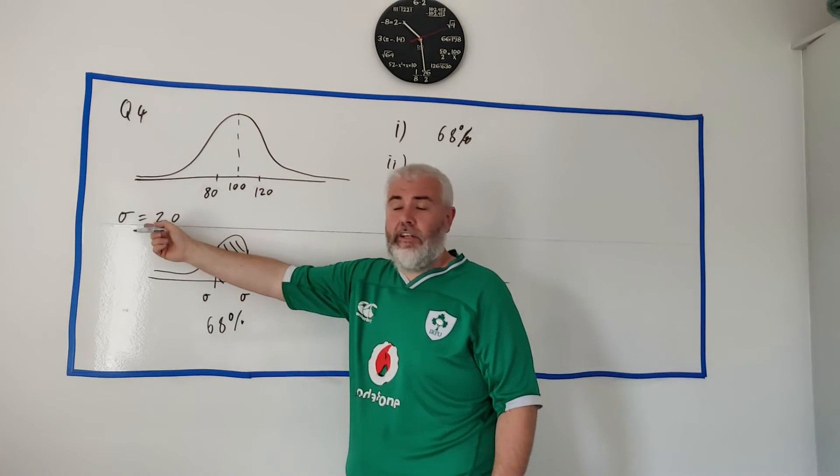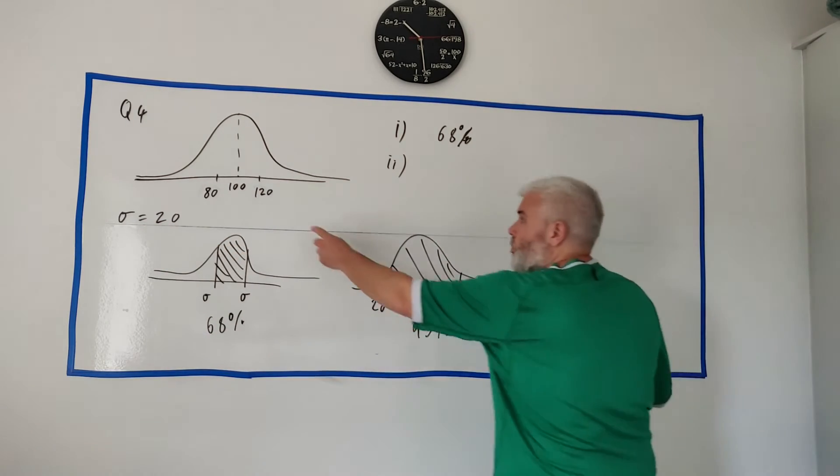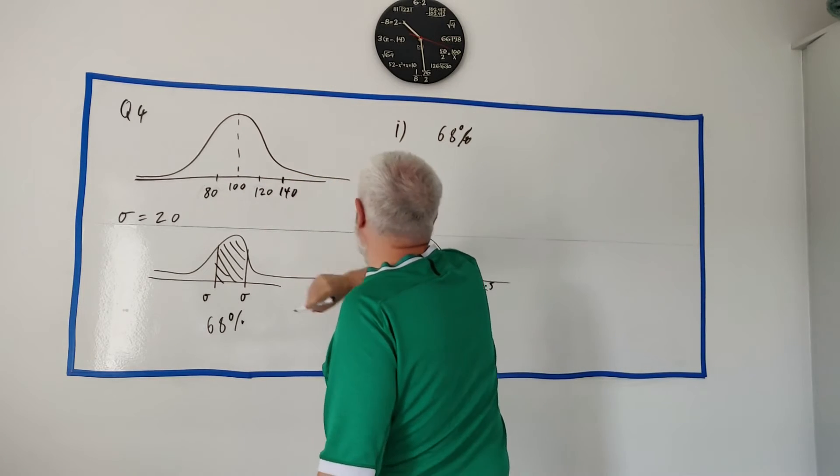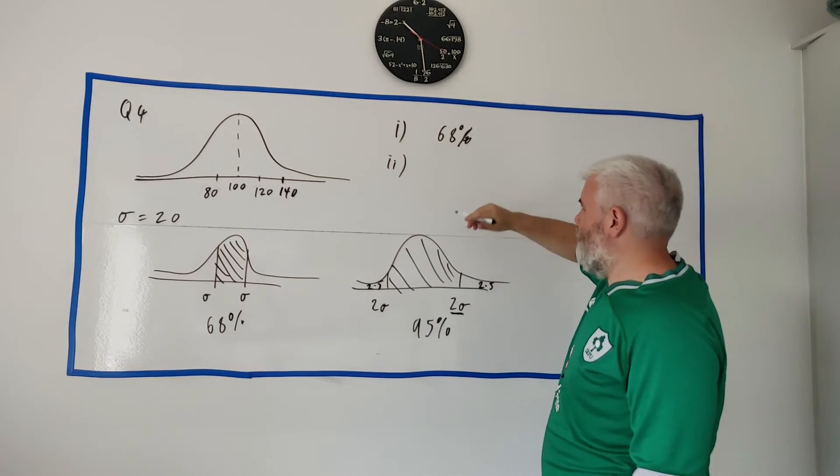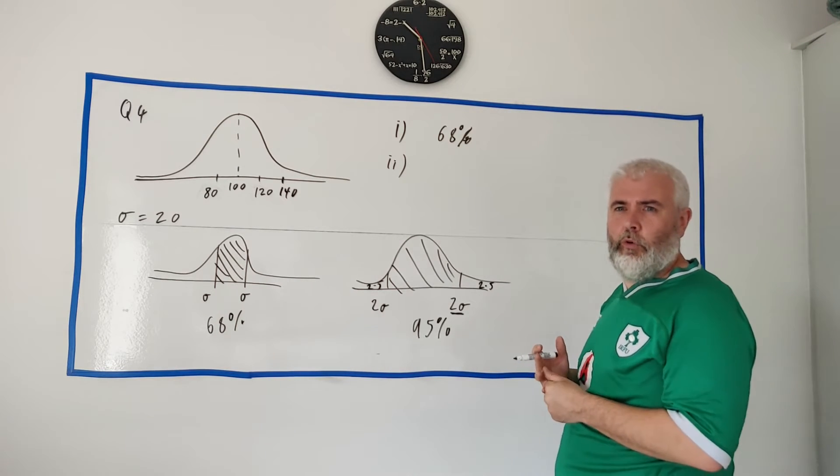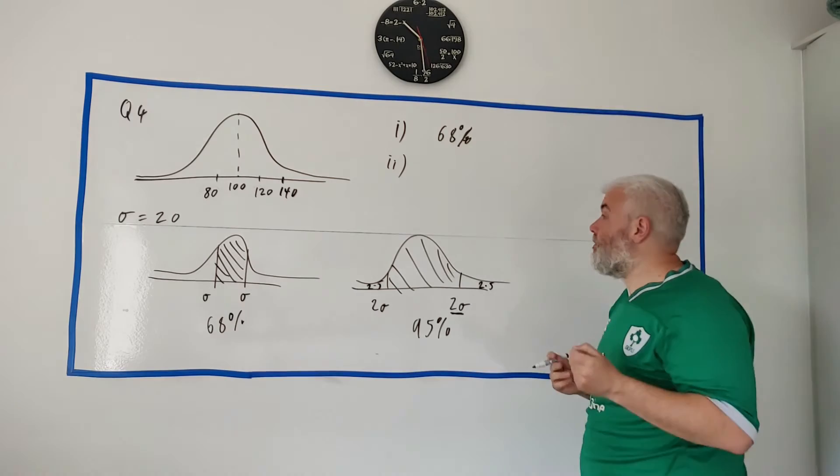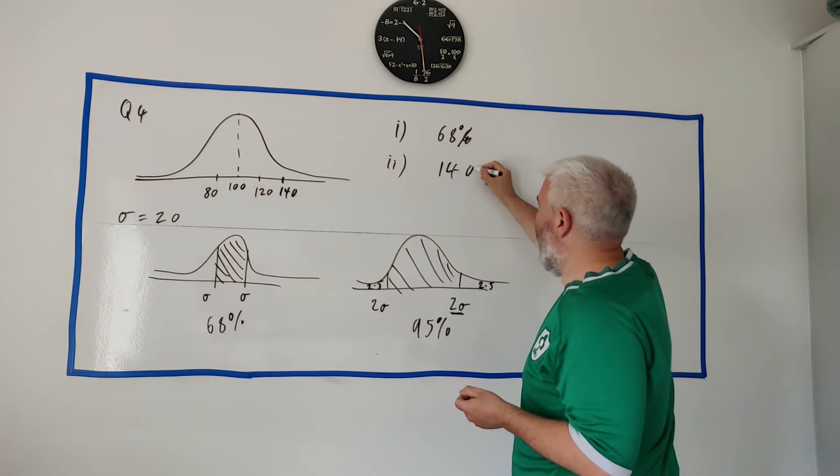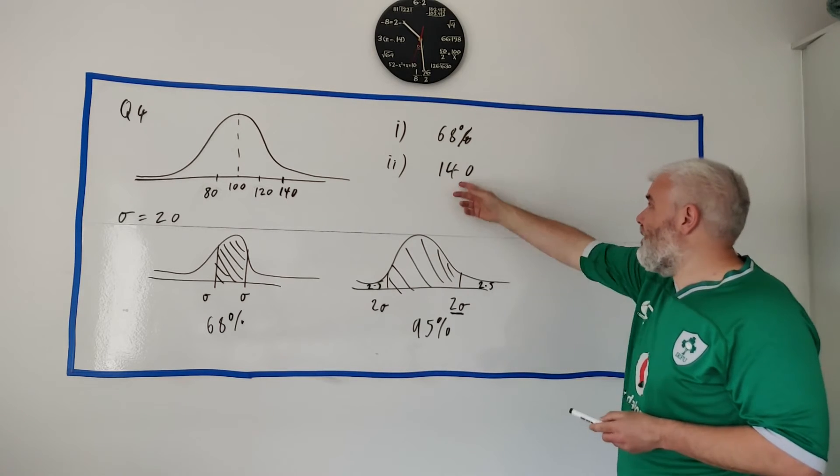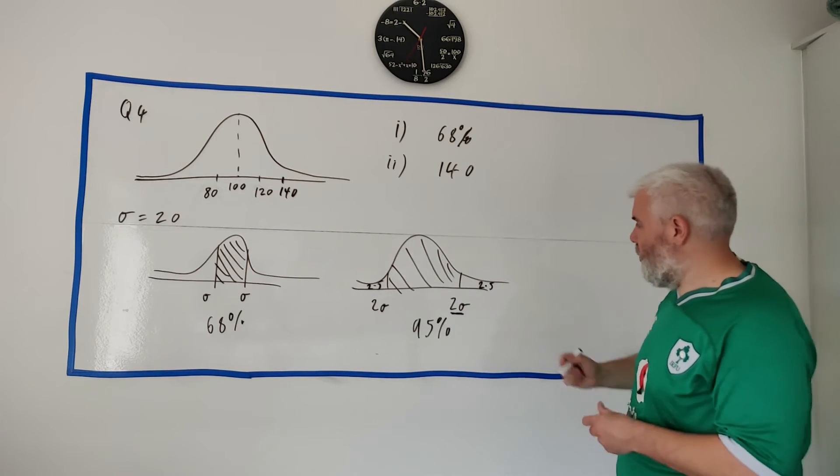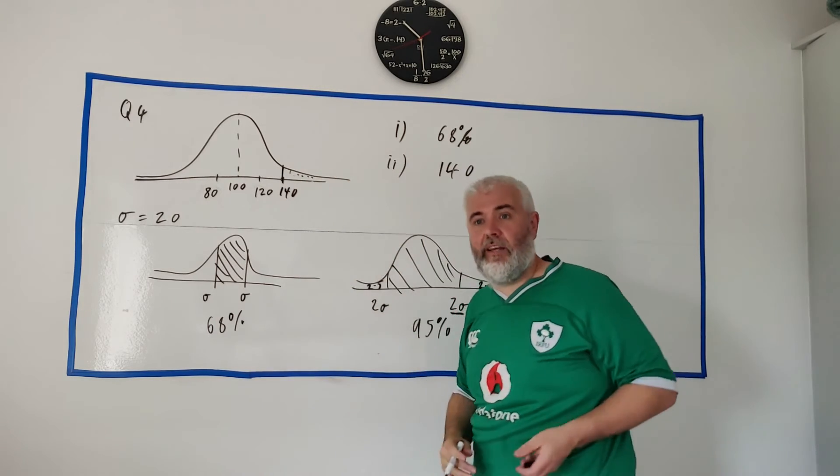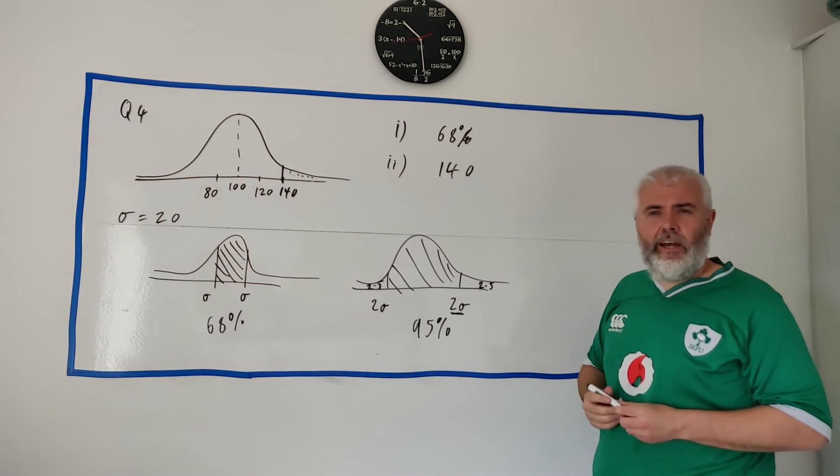And they told us the top 2.5%. So we should be looking at two standard deviations. And they told us what standard deviation is. So two standard deviations. One is 120. Two is 140. So the answer, who got higher than 2.5? Anything over 140. Oh, sorry, the least score. The smallest number to get you in the top 2.5%. It's 140. Anything above this would also get you in there. So basically, that's it. It's 140 there. Anybody got higher, it's just more and more in that area.